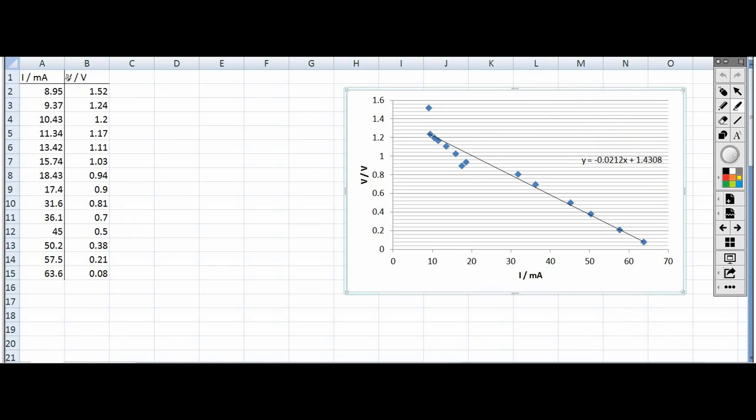Here are the results then. Here's the voltages and the currents and this is the graph, V on the Y axis and I on the X axis. Hopefully you remember the equation that we reached which was V is equal to minus R I plus E.